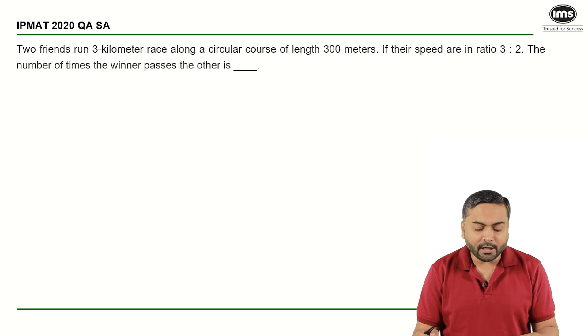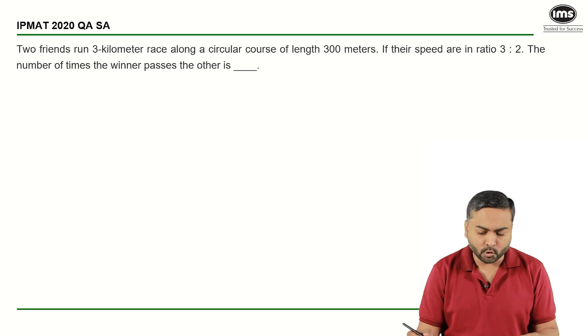Two friends run a three kilometer race along a circular course of length 300 meters. If their speeds are in the ratio 3 to 2, the number of times the winner passes the other is.